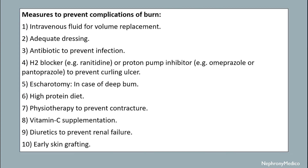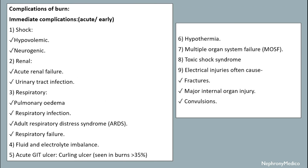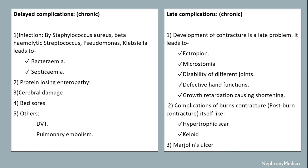Measures to prevent complications of burns include intravenous fluid for volume replacement and adequate dressing. Immediate complications include shock, acute renal failure, urinary tract infection, pulmonary edema, hyponatremia, multiple organ system failure, and toxic shock syndrome. Electrical injuries often cause fractures, major internal organ injury, and convulsions. Late complications include friction, protein-losing enteropathy, cerebral damage, and bed sores.